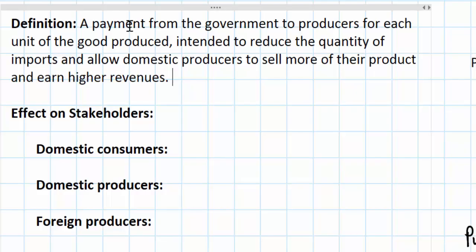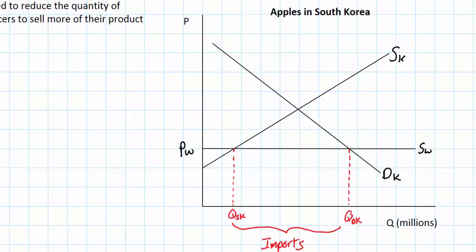In other words, the intent of a protectionist subsidy is essentially the same as any other form of protectionism: to increase the sales and revenues of domestic firms at the expense of foreign producers. Looking at our graph on the right, we can illustrate the effects. You might recall from microeconomics that a subsidy is a determinant of supply, and a subsidy lowers the marginal cost of producing a good for the firms that receive it. The supply curve represents the marginal cost — the cost of each additional apple in South Korea.